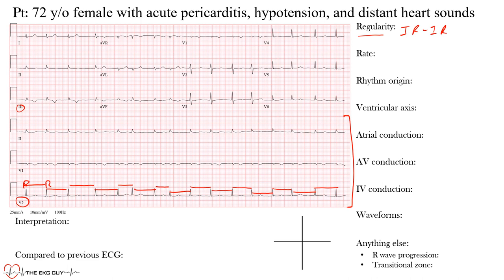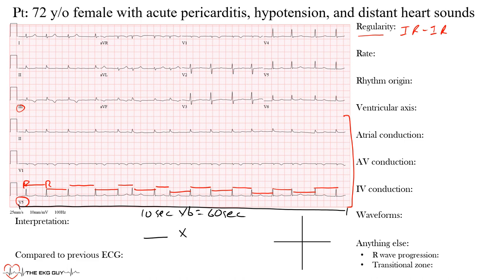Because it's not a regular rhythm, there's one easy way to find the rate without relying on the machine. Our goal is to interpret this ourselves. We know that from beginning to end is 10 seconds, and 10 seconds times 6 is 60 seconds — meaning if we find the number of complexes and multiply by 6, we get the rate in beats per minute. Let's try that using the complexes at the bottom.